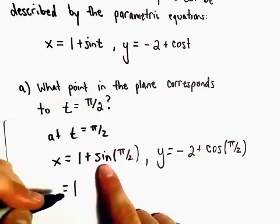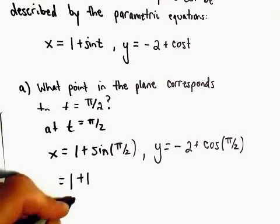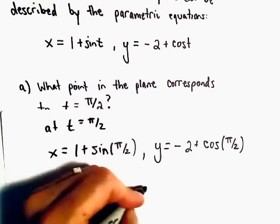Well, let's see. Sine of pi over 2, that's going to put us at the top of the unit circle. Sine there equals positive 1. So the x-coordinate will equal positive 2.